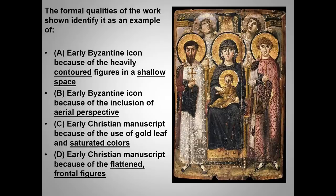Choice D is a very tempting choice if you do not remember that the work is an icon, because the figures clearly are frontal and flattened. C is tempting because the work clearly uses a lot of gold leaf. Knowing that this is not a manuscript really speeds up the process and keeps you out of trouble. Very often you will be able to eliminate two answers quickly, but only if you possess a key piece of information — which is why it's good to keep reviewing the basic identifiers of your required works. As you review each work, come up with quick art history vocabulary to describe it formally: how does the artist use line, volume, space, color, focal point?